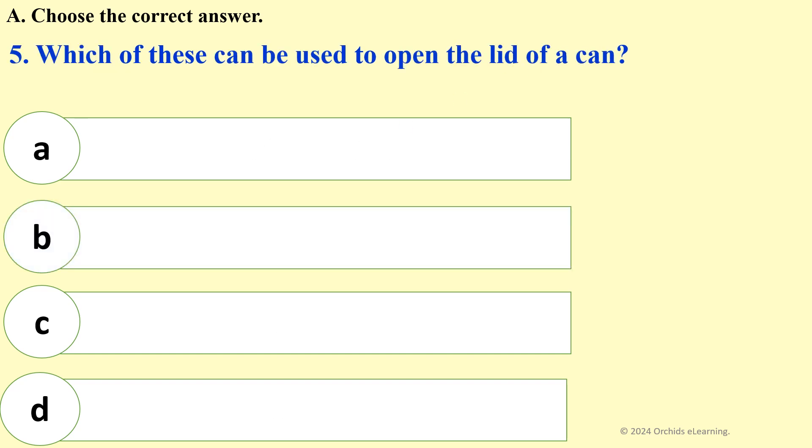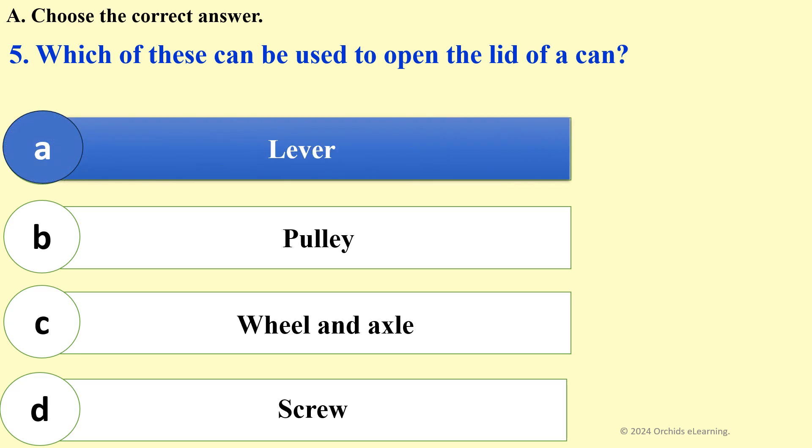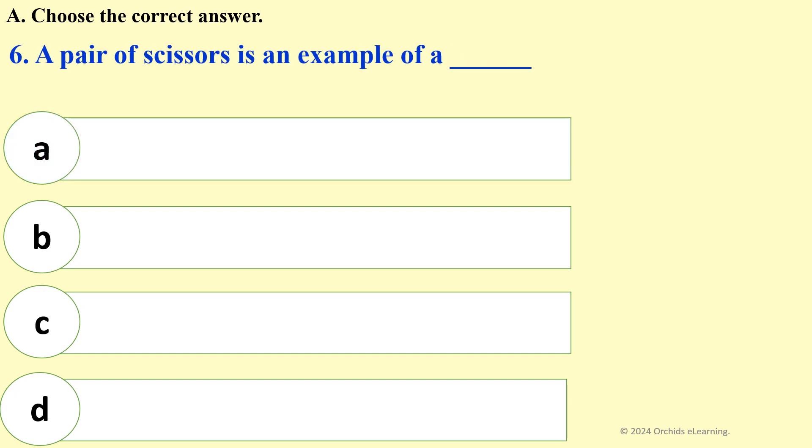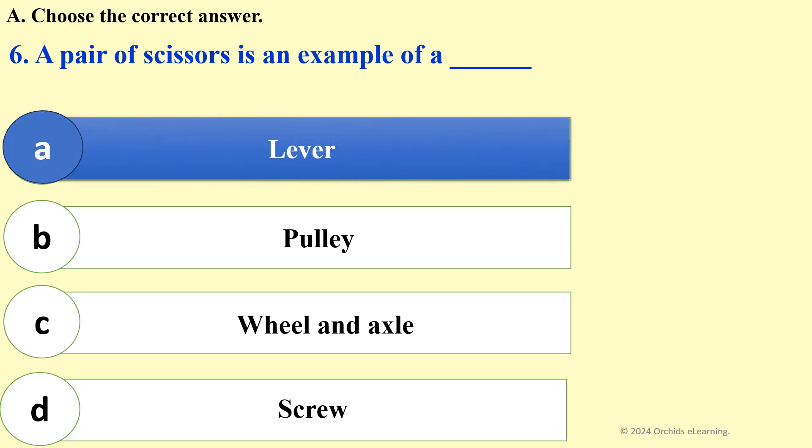Which of these can be used to open the lid of a can? A: lever. A pair of scissors is an example of A: lever.